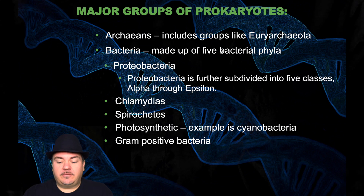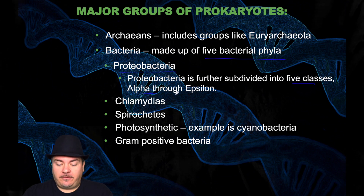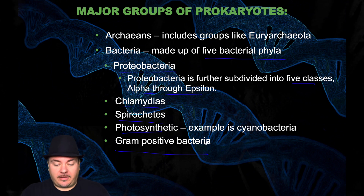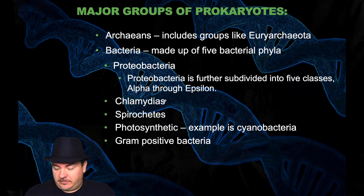The bacteria domain is made up of five bacteriophyla: the proteobacteria, which is further subdivided into five classes alpha through epsilon; the chlamydias; the spirocetes; the photosynthetic bacteria like cyanobacteria; and the gram-positive bacteria. Let's quickly run through all these different categories.